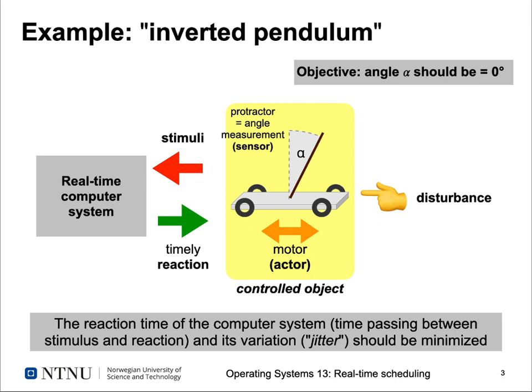Now, what can happen to such a system? Some external disturbance — for example, if I move this platform around, the rod mounted to the platform will move, so we'll have to counteract to keep it vertical. The reaction time of a computer system — the time passing between the stimulus being received and the reaction being initiated — and also the variation of this reaction time, which we also call jitter, should be minimized in such a real-time computing application.